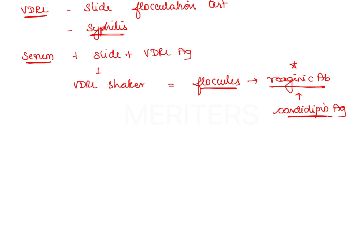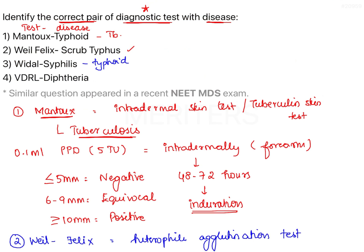There is one more test used in diagnosis of syphilis — the Kahn test — which is an example of a tube flocculation test. Therefore, option 4 stating VDRL test for diphtheria is a wrong combination; VDRL is for syphilis. For diphtheria, the diagnostic tests are the Schick test or the Elek gel precipitation test.